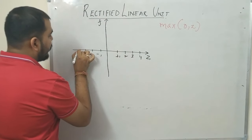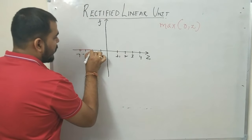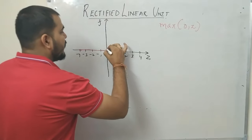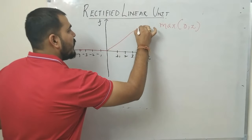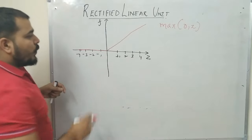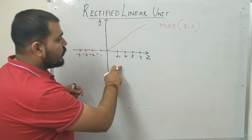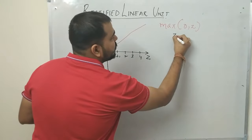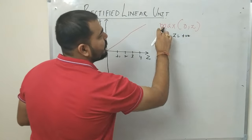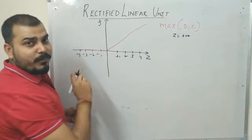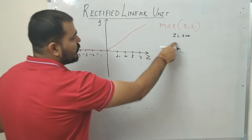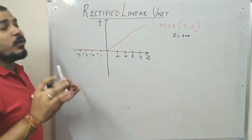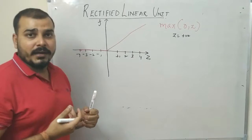Whenever the z value is positive, the output will be increasing. So if my z value is 1, this function will also give me 1. That is the simple formula for ReLU, rectified linear unit.